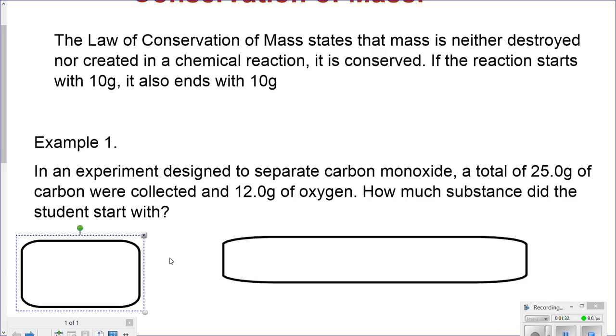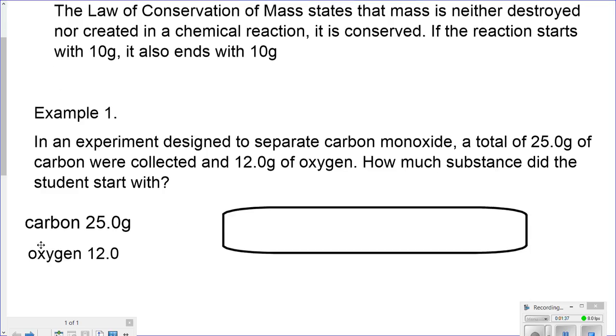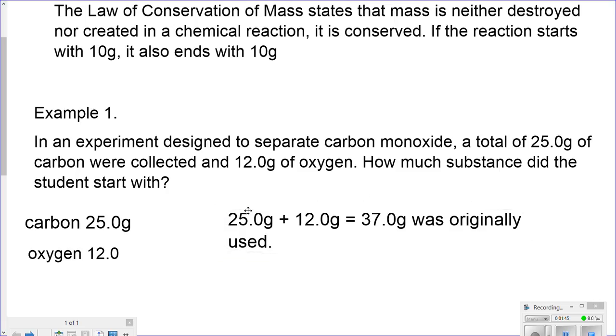So, I like to do my simple math. I make a list of what I have and what I need. I have 25 grams of carbon, I have 12 grams of oxygen. Simple equation states that I just add those two. And I began with 25 plus 12 grams gives me 37 grams of the compound.